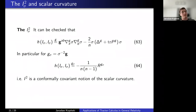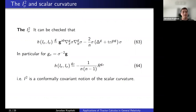Another important property of the scale tractor i-sigma is its length squared. Computing it in some scale g gives the right-hand side of equation sixty-three. Evaluating it in the scale induced by sigma and using the fact that the scale is annihilated by its own induced connection, what remains is the trace of the Schouten tensor, which can be written as the Ricci scalar, giving the right-hand side of sixty-four. So the length of the scale tractor encodes the Ricci scalar.